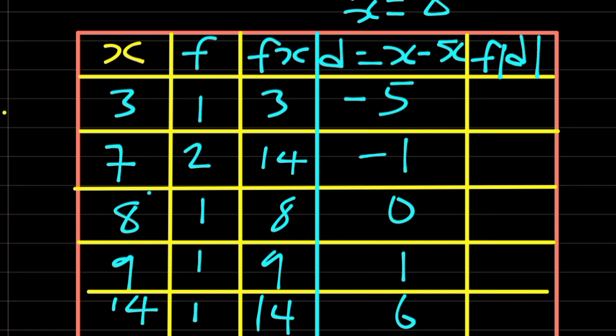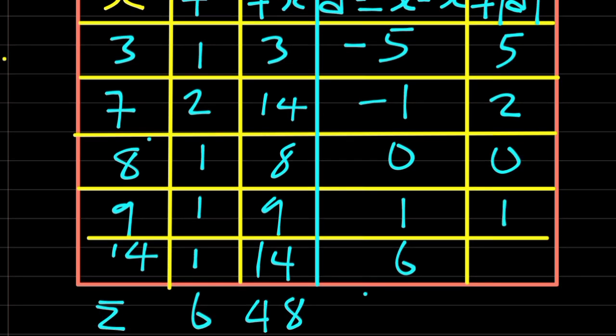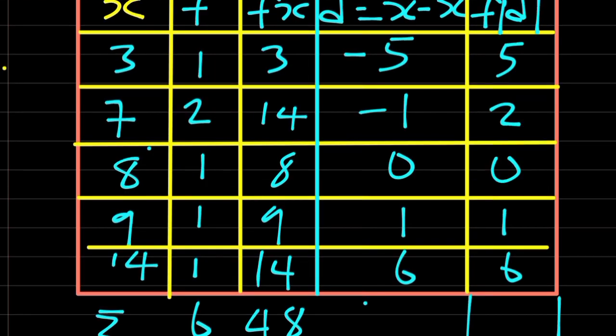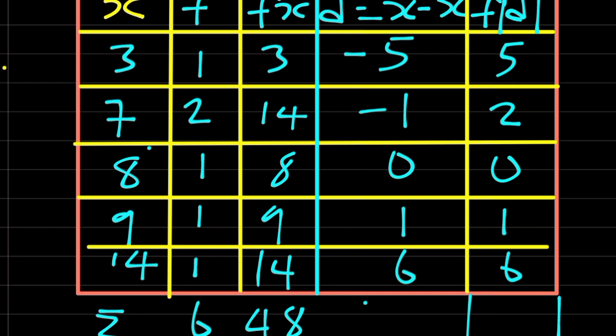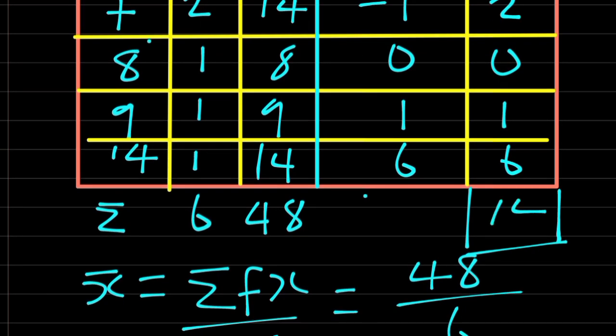So, f of d. 1 times 5, we have 5. 2 times 1, we have 2. 1 times 0, we have 0. And then, 1 times 1, 1. 1 times 6, 6. Let's add the whole of this together. 5 plus 2, that is 7. 8 plus 6, that is 14.